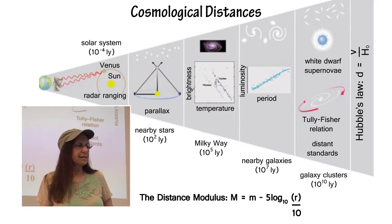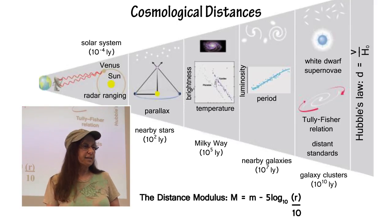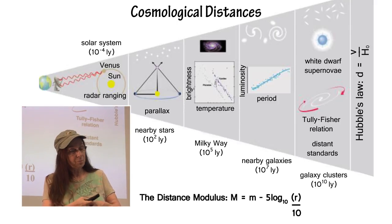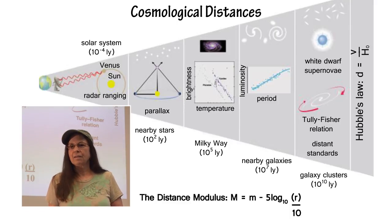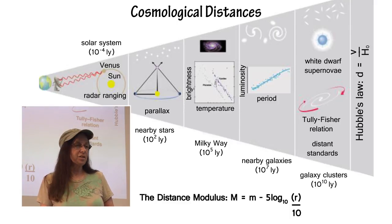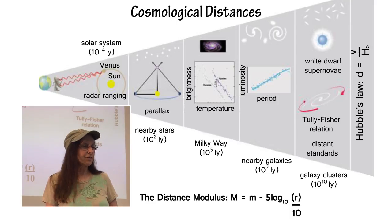Cosmological distances. The Cepheids, that transitory stage while they're pulsating, you can use them to calculate the distances to nearby galaxies. This particular year, we used the white dwarfs for that, for galaxy clusters, and we had a bit of Hubble's Law, and that's in effect for really distant galaxies.